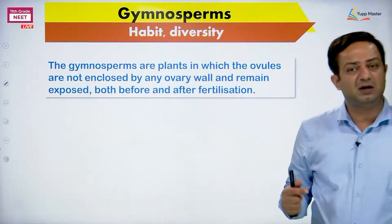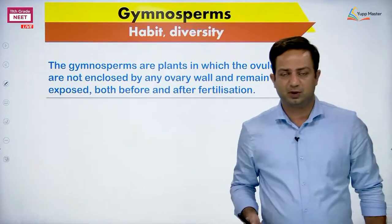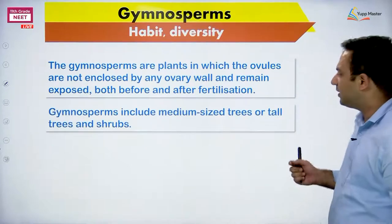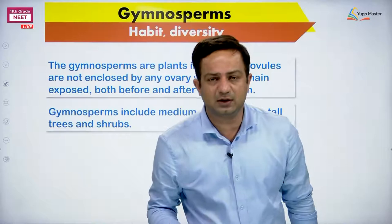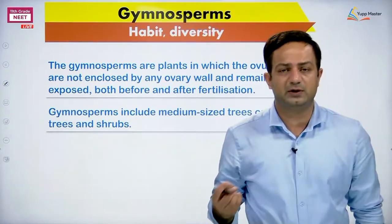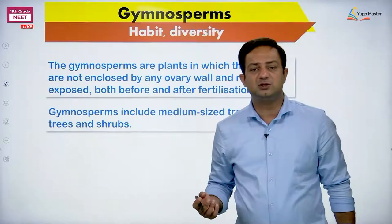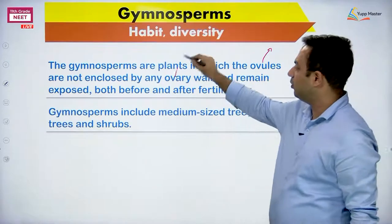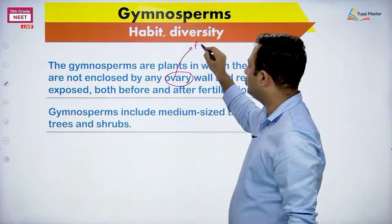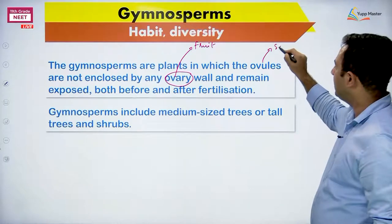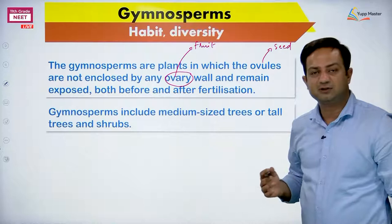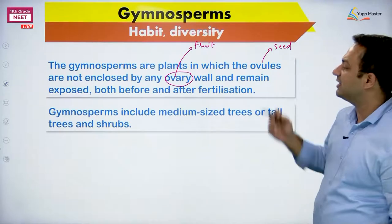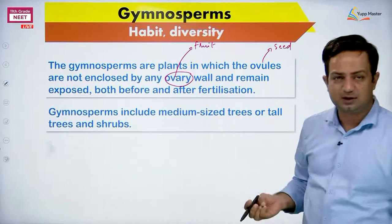The general characters of gymnosperms: their members are mostly small or large-sized trees — the tallest tree in the world belongs to gymnosperms — or they can be shrubs; herbs are rare. Gymno means naked, sperma means seed, so they form seeds but the seeds are naked. The ovule forms seed on fertilization, but seeds are not enclosed in an ovary, so seeds are exposed — naked seed plants.